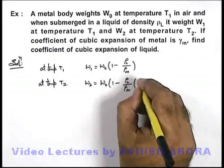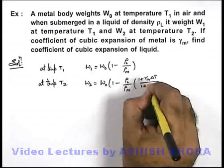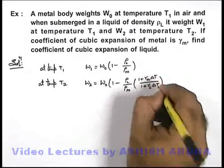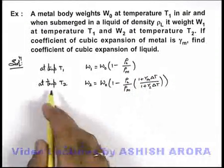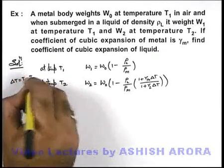Which can be written as ρₗ/ρₘ multiplied by (1 + γₘΔT)/(1 + γₗΔT), where ΔT is rise in temperature. Here we can write ΔT is equal to T₂ minus T₁.